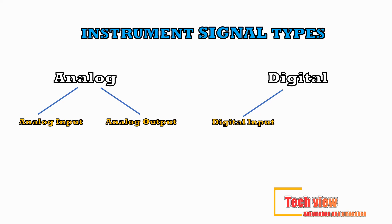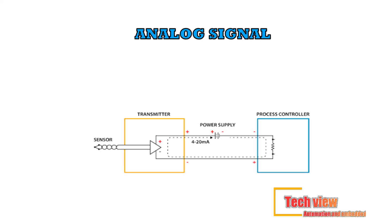Digital I/O devices are input or output devices that provide or receive discrete digital signals. A discrete digital signal is one that can report only two states, such as on/off or open/closed.